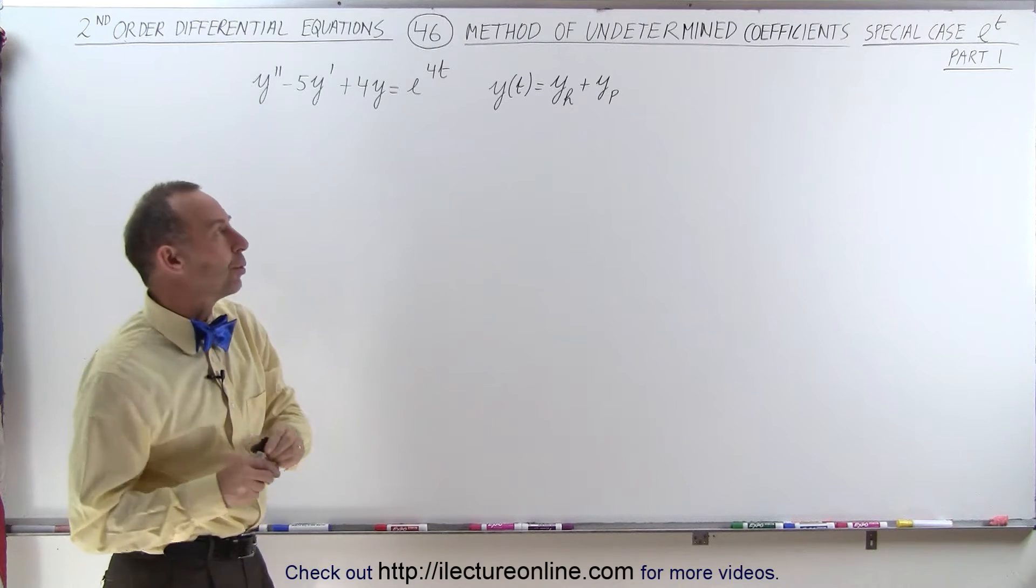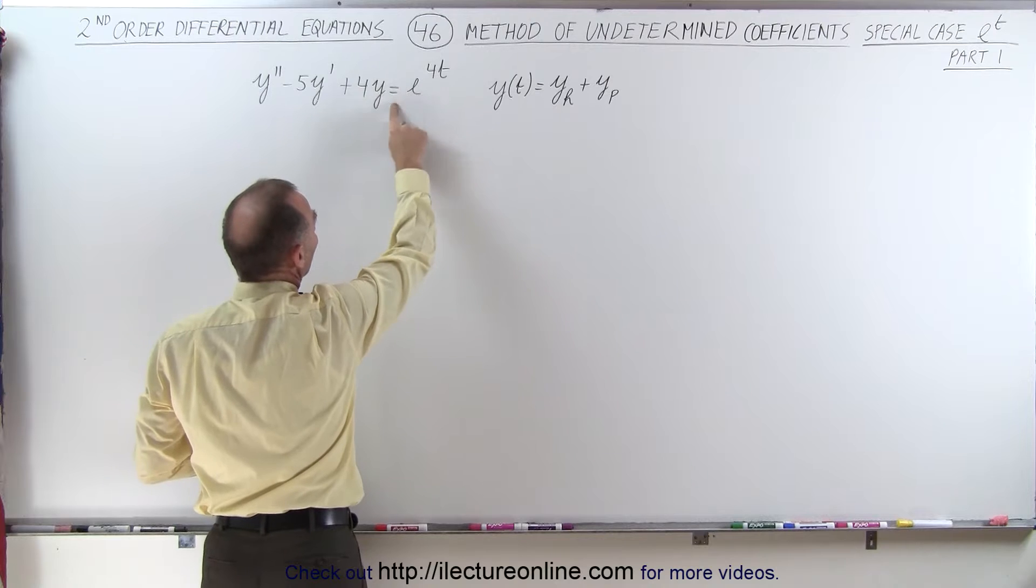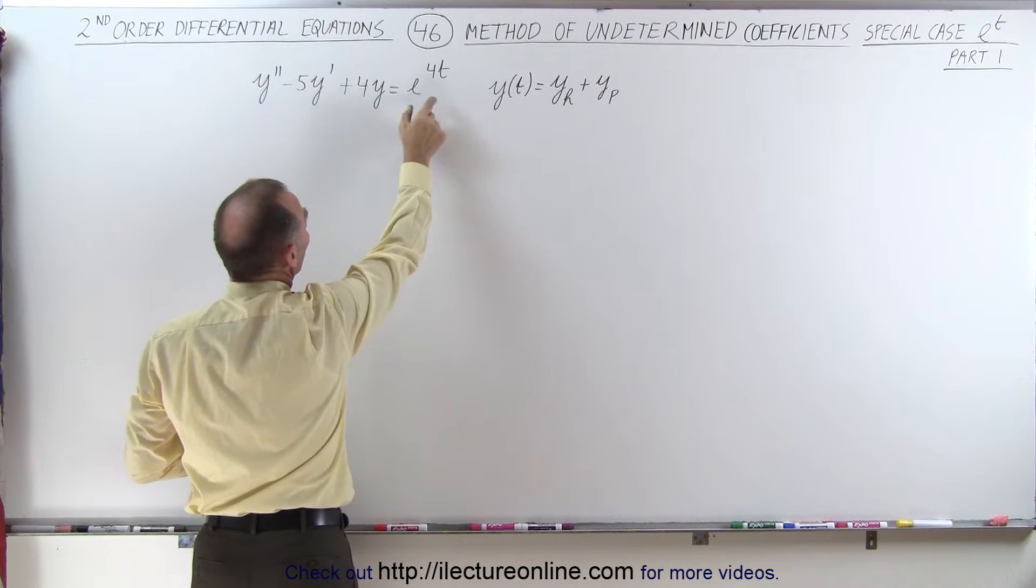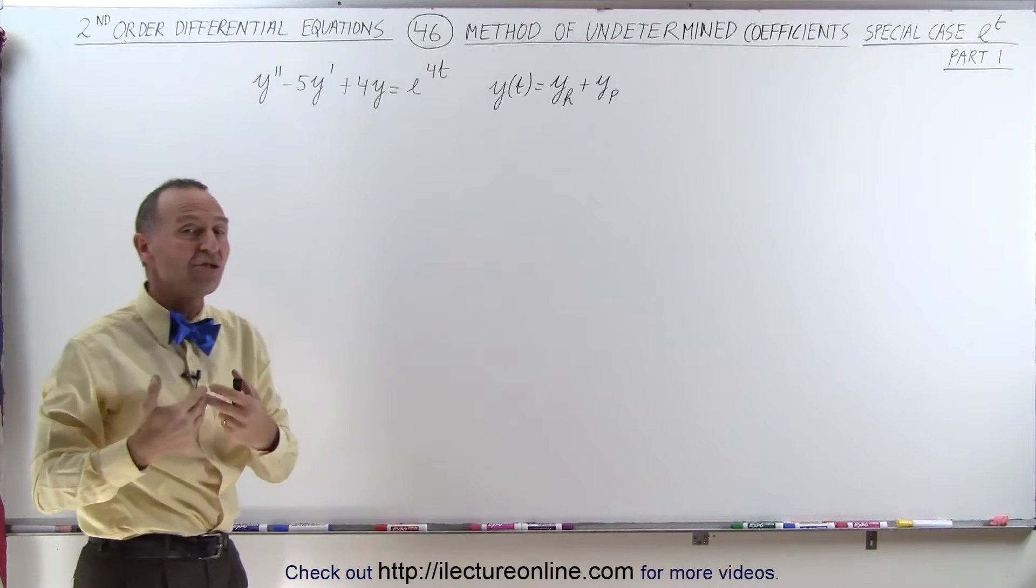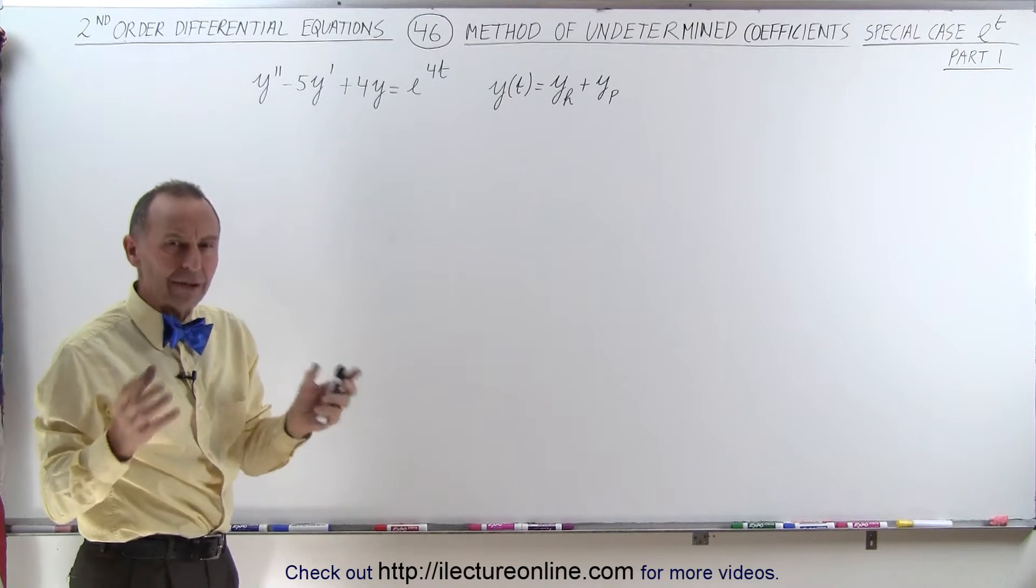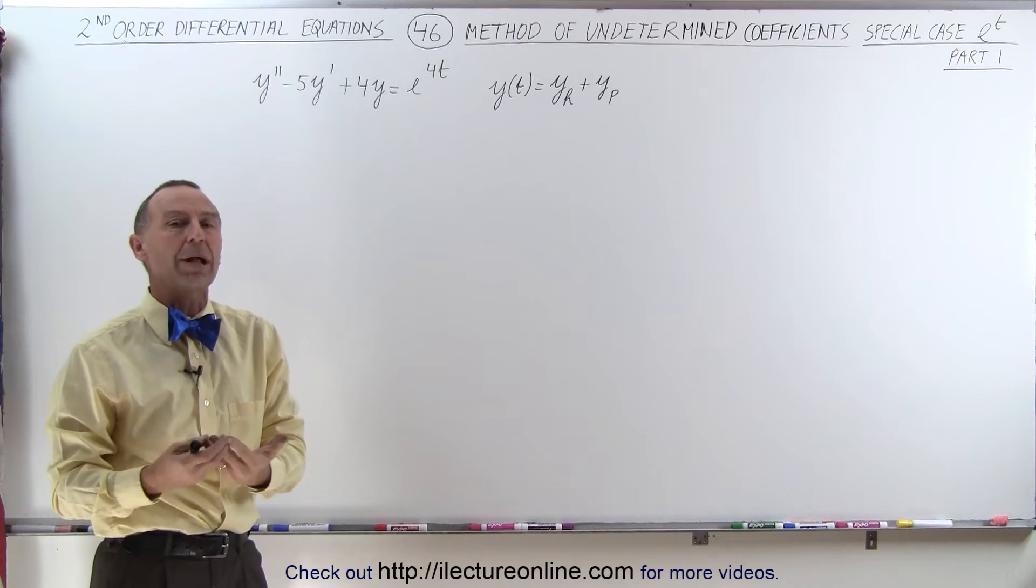In an earlier video, we had indicated that if the exponent here on the right side of the equal sign was equal to the exponent that we're going to get when we solve for the homogeneous part of the solution, then we have a problem. And so in this video, we're going to show you why that is a problem.